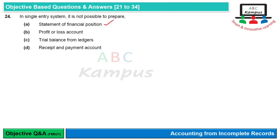कुछ न कुछ data की base पर हम statement of financial position बना भी सकते हैं, profit or loss account से profit भी calculate कर सकते हैं। Trial balance from ledger नहीं बन सकता क्योंकि ledgers maintain ही नहीं हो रहे होते। Receipt and payment account simply cash की information या bank statement से बन सकती है। तो C option — trial balance from ledgers — correct होगा।